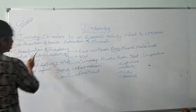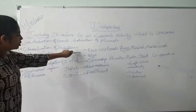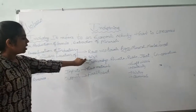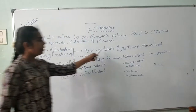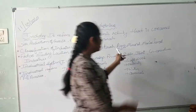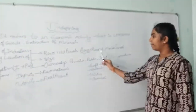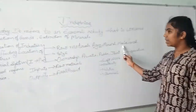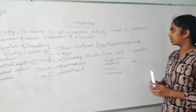Coming to the classification of industries. In this we have 3 parts: raw materials, size, and ownership. In raw materials, it is again divided into 4: agro-based industries, mineral-based industries, marine-based industries, and forest-based industries.